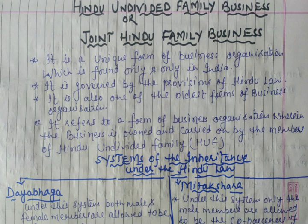In joint Hindu family business, there are two systems of inheritance under Hindu law. The Dayabhag system prevails in West Bengal — under this system, both male and female members are allowed to be co-parceners. The Mitakshra system prevails all over India except West Bengal — under this system, only male members are allowed to be co-parceners. Co-parceners are members who have equal ownership rights over the property of an ancestor.